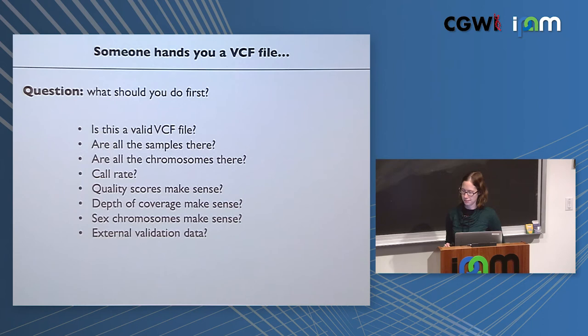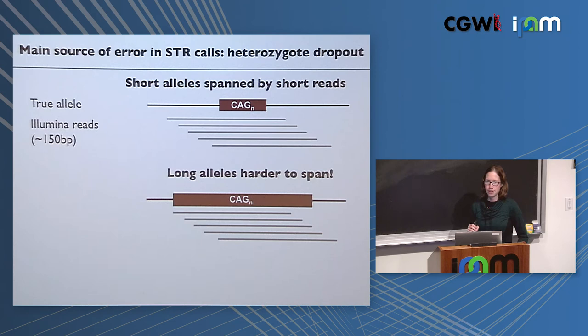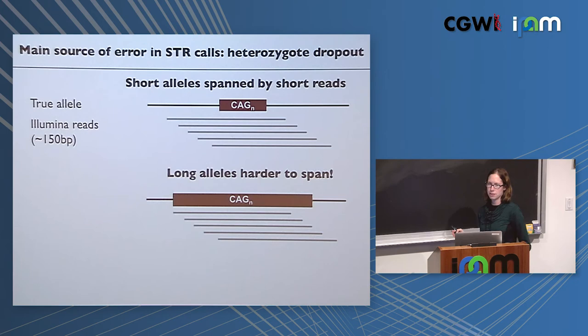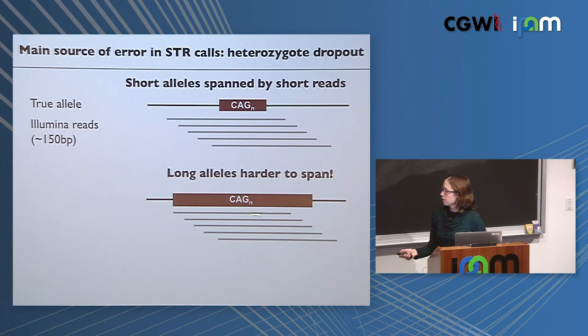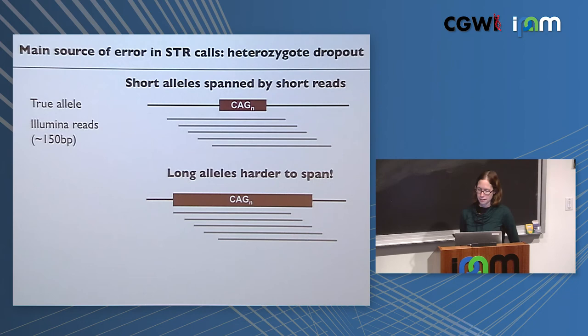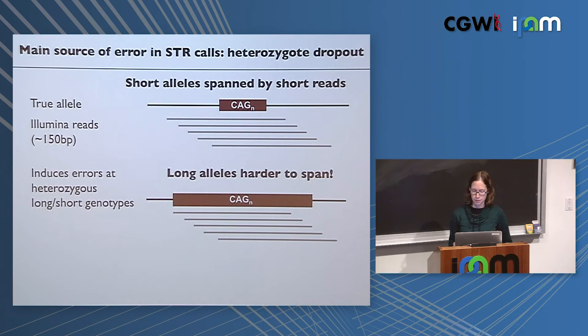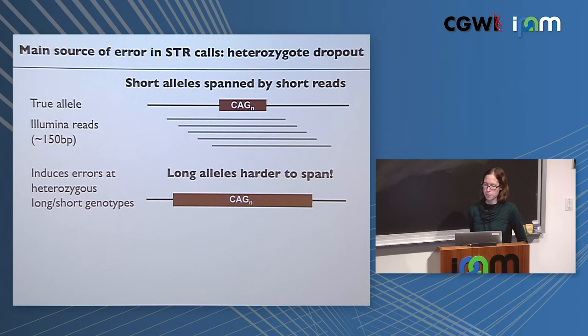Our main remaining source of error in STR calling is heterozygote dropout. HIPster requires reads that completely span the repeat region. For a short 40 base pair repeat with 150 base pair Illumina reads, no problem. But for longer alleles that can barely be spanned, we often see no reads spanning that allele. If someone is heterozygous for a short and a long allele, we may only see reads spanning the short one and accidentally call them homozygous.